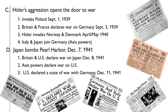Then the Axis powers declared war on the United States. The United States declared war against Japan on December 9th, 1941. Then Germany and Italy declared war on the United States, and the United States declared a state of war with Germany on December 11th, 1941. The U.S. was now at war with Germany and Italy, and the Japanese were checked in land fighting. So the world, again, was at war.